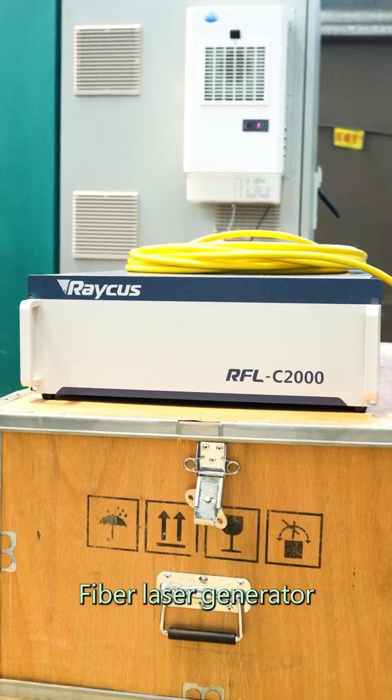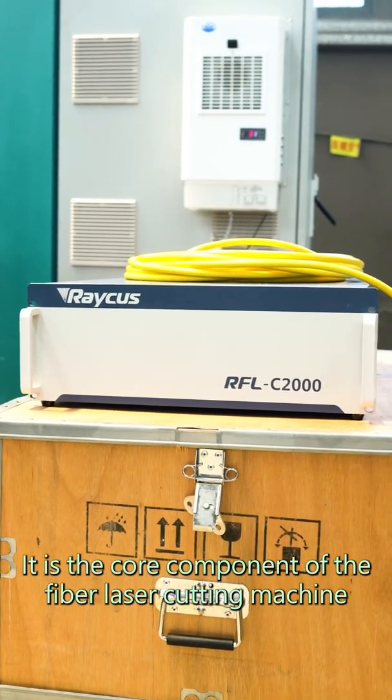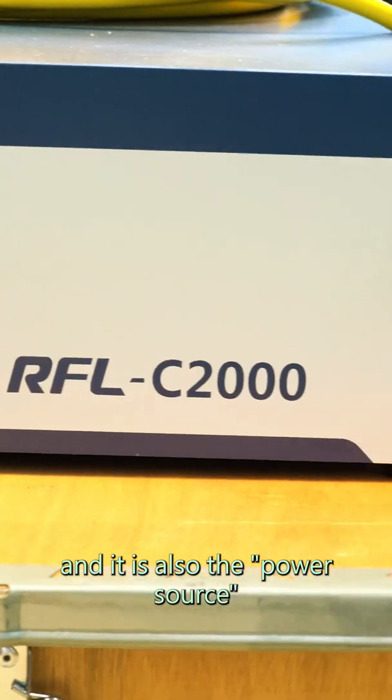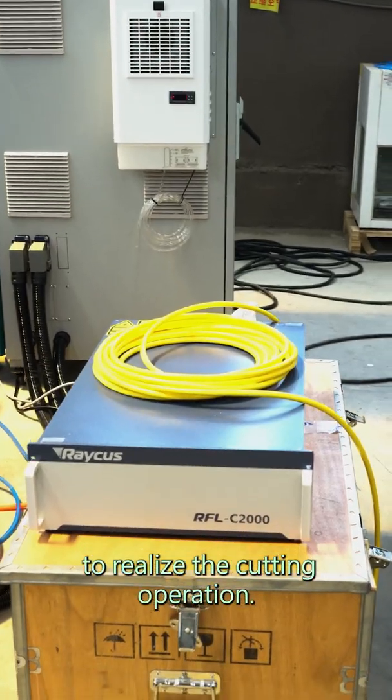The fiber laser generator, the core component of the fiber laser cutting machine, is also the power source for the machine to align the cutting operation.